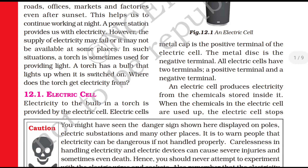A power station provides us with electricity. However, the supply of electricity may fail, or it may not be available at some places. A torch is sometimes used for providing light where electricity is not available - there we use a handy light.